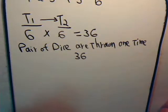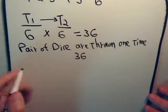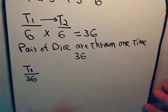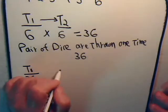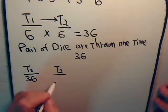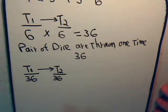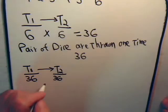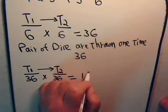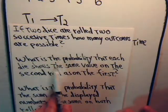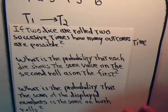Again, 36 possible outcomes. So if two dice are rolled two times, for a pair of dice on the first roll there are 36 possible outcomes, and on the second roll again there are 36 possible outcomes. By the counting principle, the total number of outcomes is 36 times 36, which equals 1,296.